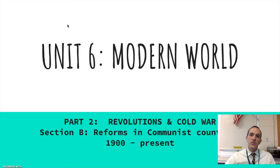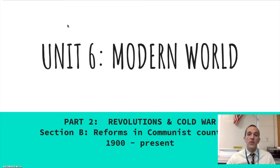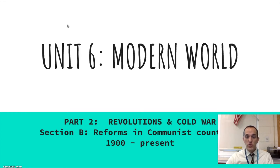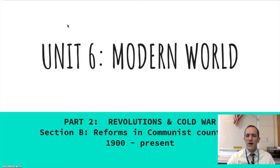The irony is that the first two countries where communist revolutions really took hold — Russia and China — weren't even fully industrialized. In China, Mao focused the revolution on peasants, and in Russia the Soviet Union also focused significantly on peasants. You would think a communist revolution would happen in a fully industrialized country, but it didn't.